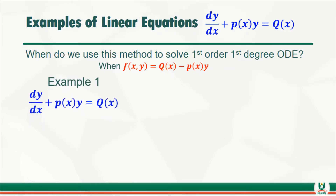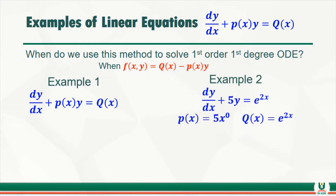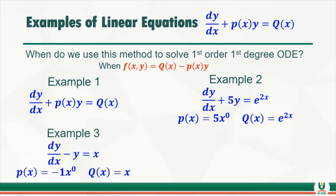Example one: dy/dx plus p(x)·y. You will notice that anything multiplying y must be a function depending only on x, and the other side will have k(x). In example two, p(x) is 5·x⁰ — don't forget anything to the power zero is one — so p(x) = 5. In example three, p(x) is minus one times x⁰, while k(x) is x.